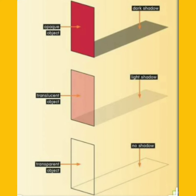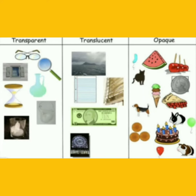A transparent object forms no shadow. A translucent object forms a very light or faint shadow. And opaque objects form a very dark shadow. So here are some examples of transparent, translucent, and opaque objects.